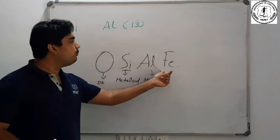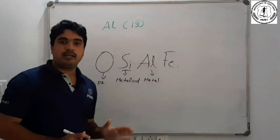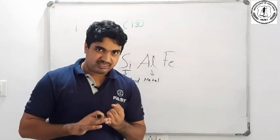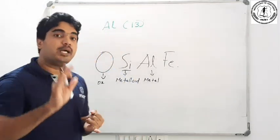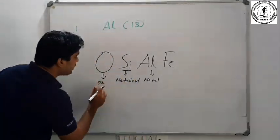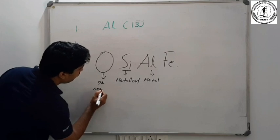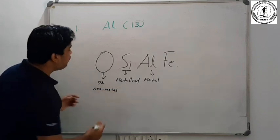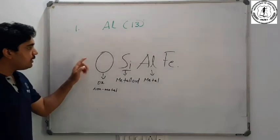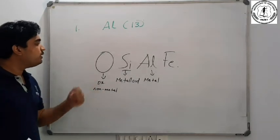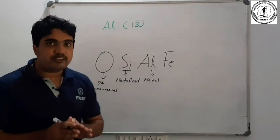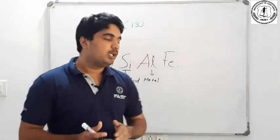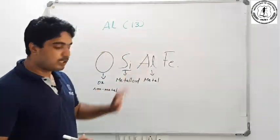The order is: Oxygen, Silicon, Aluminium, Iron. We use oxygen, then silicon, then aluminium. This code — OSAI — is different from other arrangements.